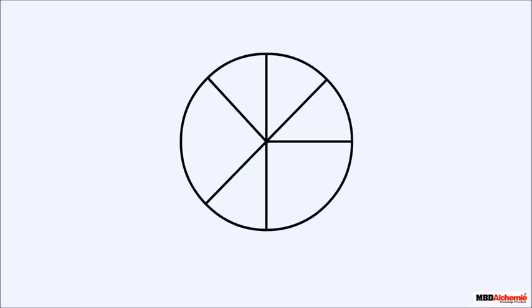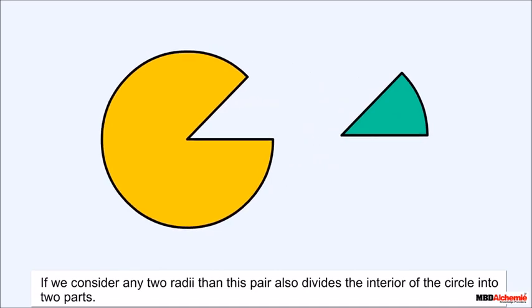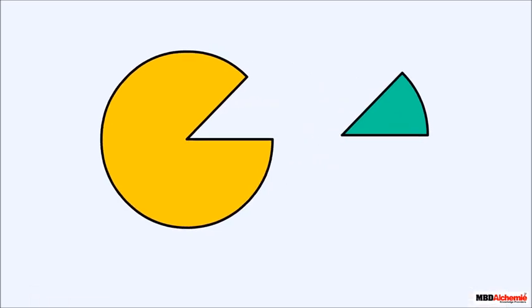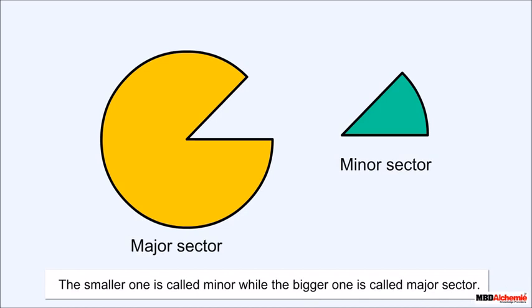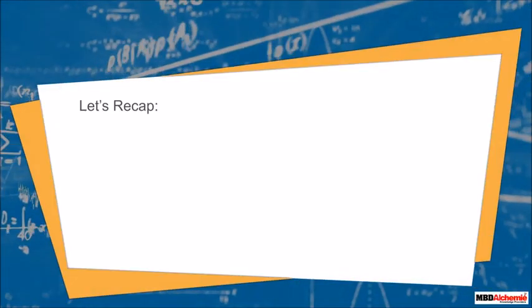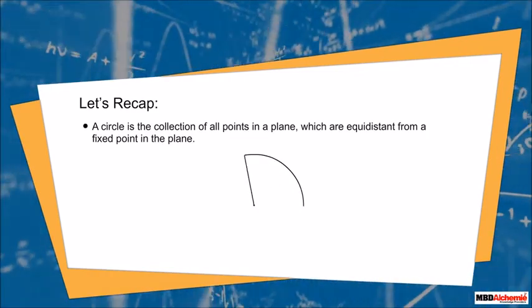A circle has infinite radii of the same length. If we consider any two radii, this pair divides the interior of the circle into two parts — each part is called a sector. The smaller one is called the minor sector and the bigger one is called the major sector.